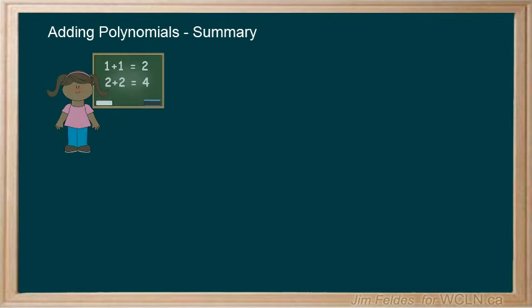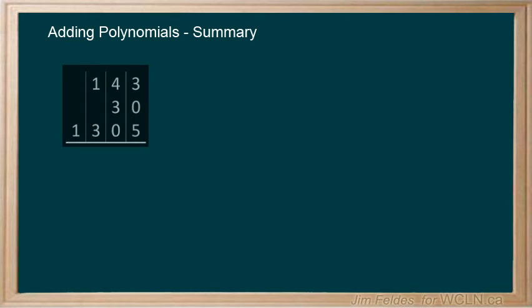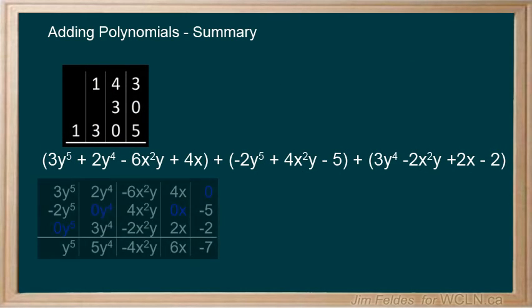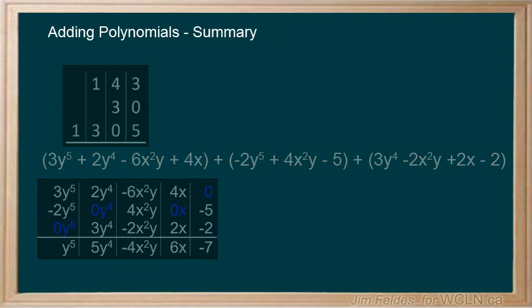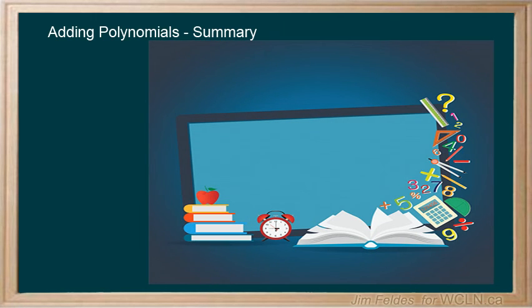Adding simple polynomials can be done like adding simple integers. Find the like terms and combine coefficients and constants to solve. But just like we would for adding more challenging numbers, as the polynomials get more complex, it is advisable to add them vertically for accuracy. You can see and will continue to observe with our next few lessons, much of what we are doing is extending and finding new applications for the basic skills you have been learning for many years. In our next lesson, we will introduce subtracting polynomials.